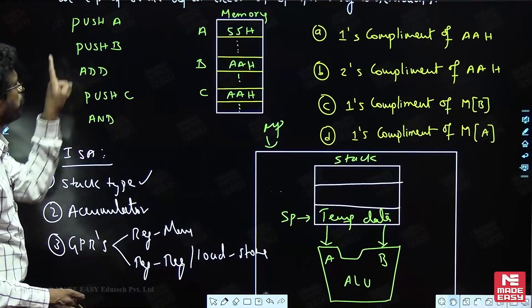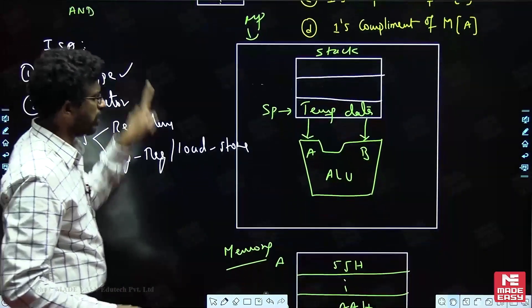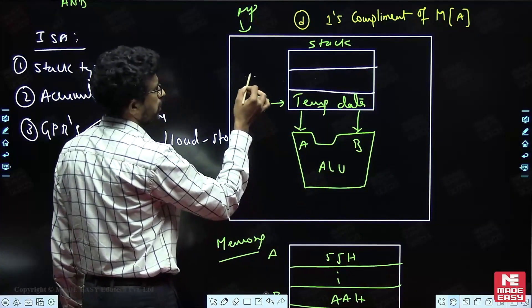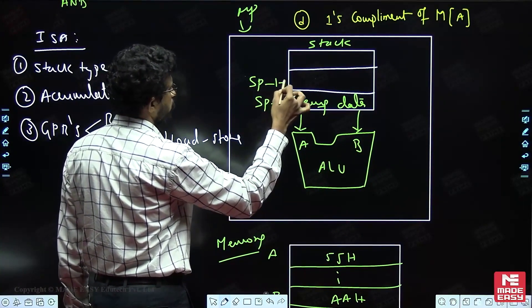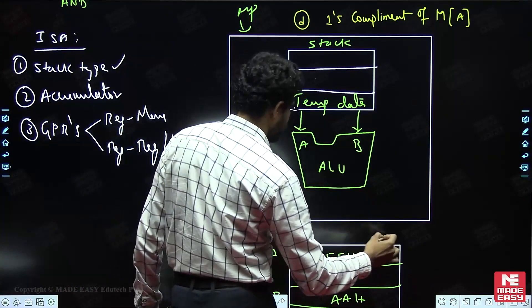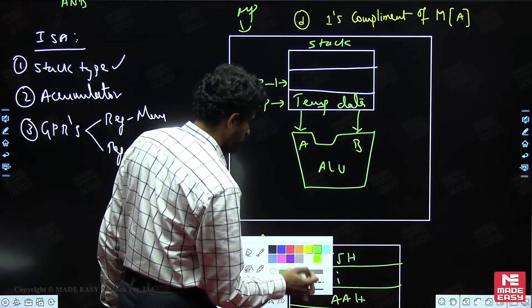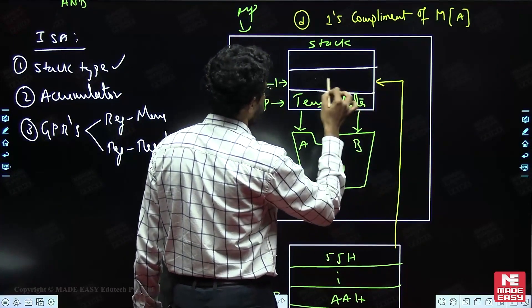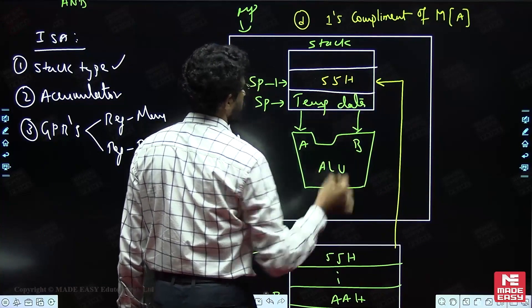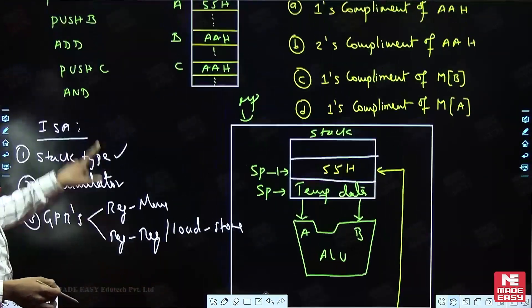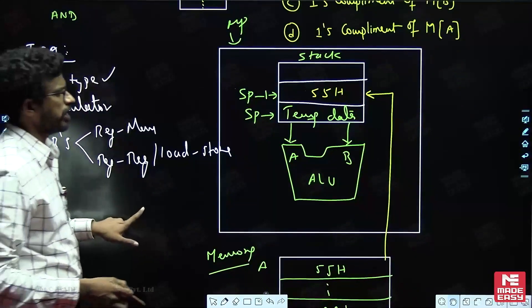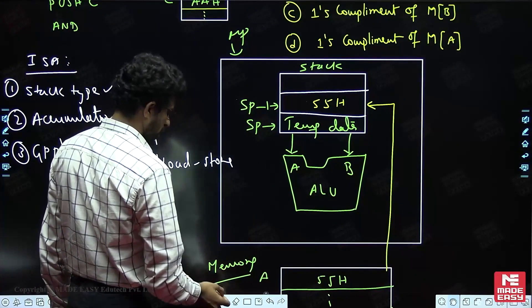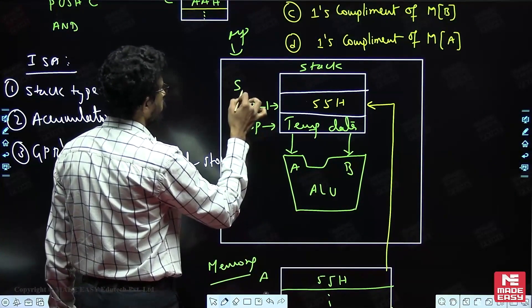Now, the first instruction is Push A. Push A means the data 55H is first brought into the stack. Push operation: SP is decremented by 1 (SP minus 1), and the content of A — which is 55H — is placed at that location. So after Push A, the stack contains 55H at the top.